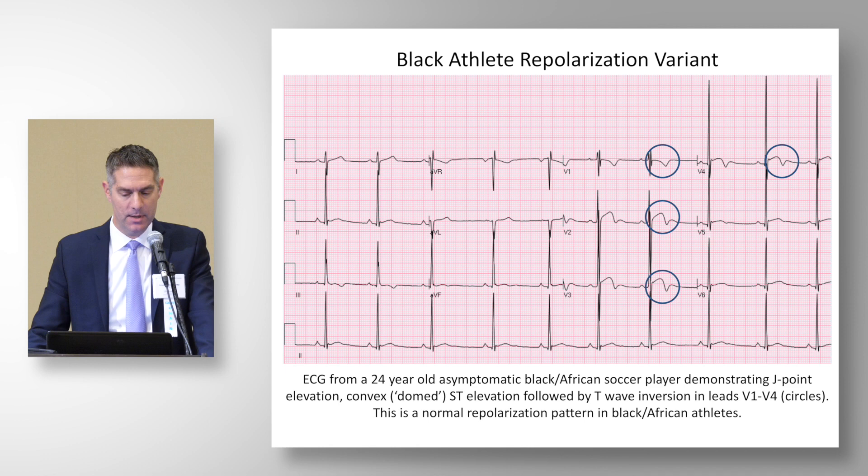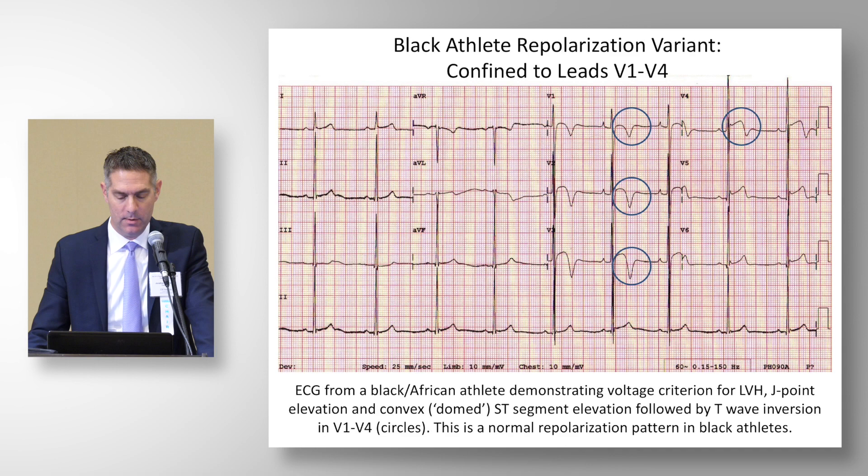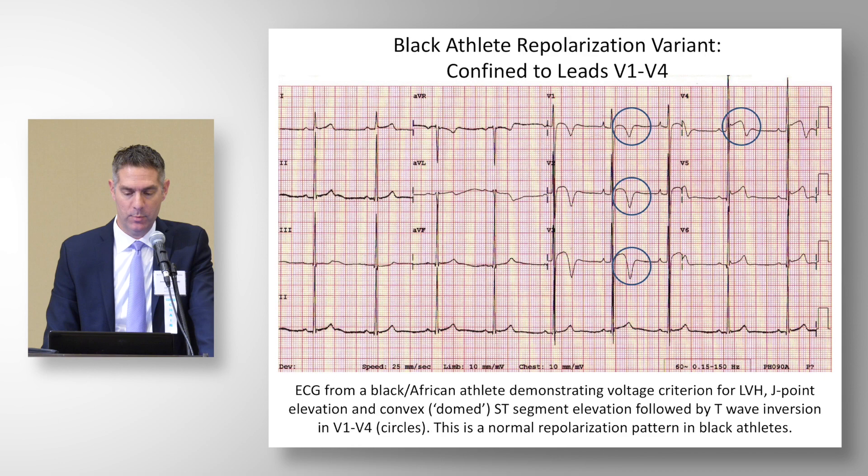This is another example of the Black athlete repolarization variant in leads V1 through V4. This is a normal finding in a Black athlete and does not require further investigation.